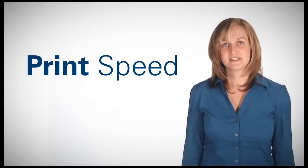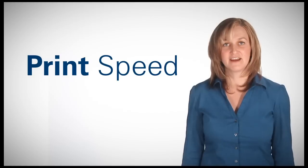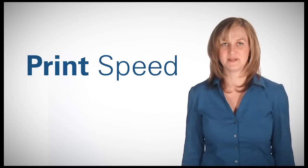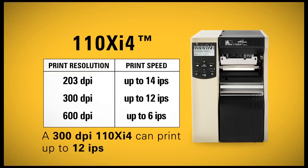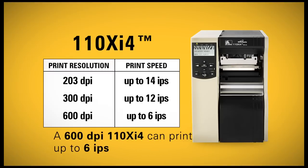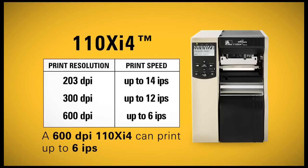For example, the print speed of a 110 XI4 printer varies based on dpi. A 203 dpi 110 XI4 can print up to 14 ips (inches per second). A 300 dpi 110 XI4 can print up to 12 ips. A 600 dpi 110 XI4 can print up to 6 ips.